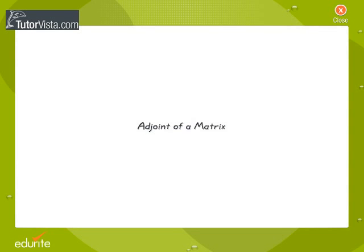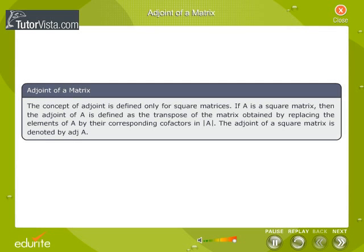Adjoint of a Matrix. The concept of adjoint is defined only for square matrices. If A is a square matrix, then the adjoint of A is defined as the transpose of the matrix obtained by replacing the elements of A by their corresponding cofactors in |A|. The adjoint of a square matrix is denoted by adj A.